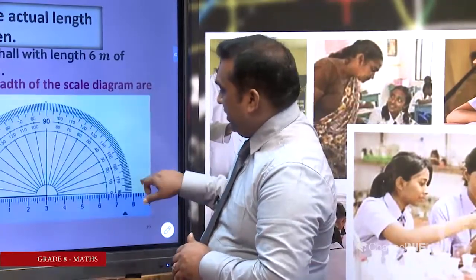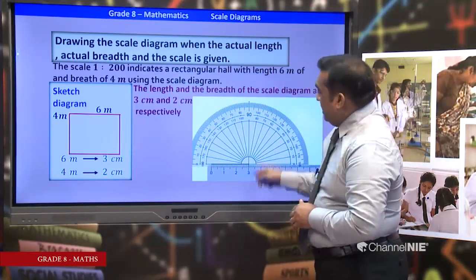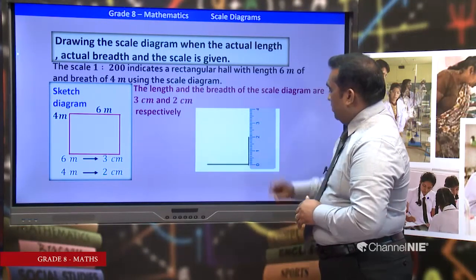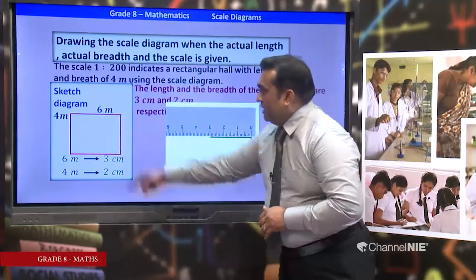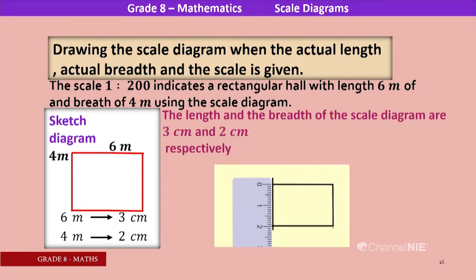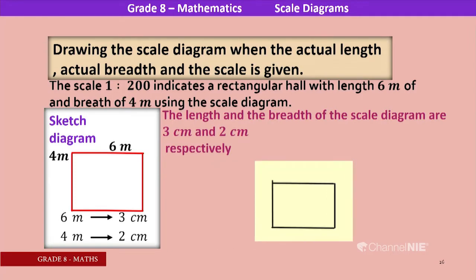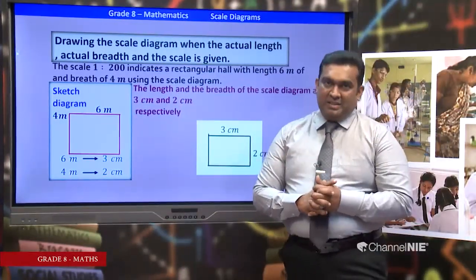Draw the scale diagram — opposite sides are equal. The length is 3 centimeters and breadth is 2 centimeters. Complete the diagram using the mathematical instrument box — a straight edge and protractor. This gives us the completed scale diagram of the rectangular room.